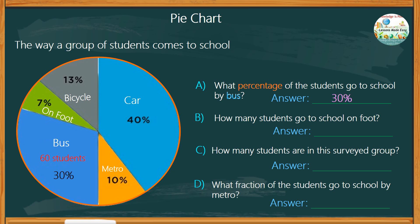Next, how many students go to school on foot? With this question, you can choose to work hard or work smart. Let's do the easiest way. We can use the information we acquired earlier: 30% of the students who go to school by bus is 60.